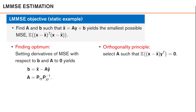We start by viewing the static case where the LMMSE objective is to find a matrix A and a vector B such that our estimate x-hat can be written as an affine function of the data Y — that is, A times Y plus the vector B. We want to find A and B such that our estimate yields the smallest possible mean squared error.